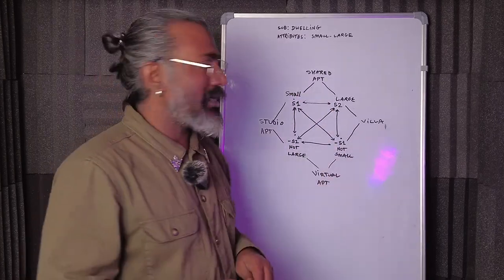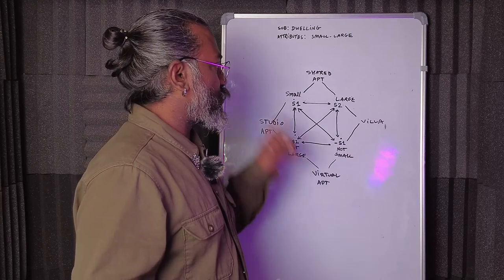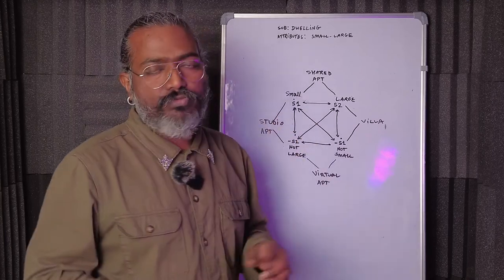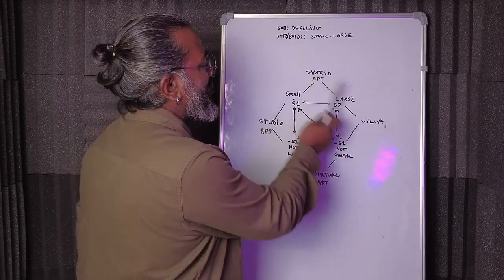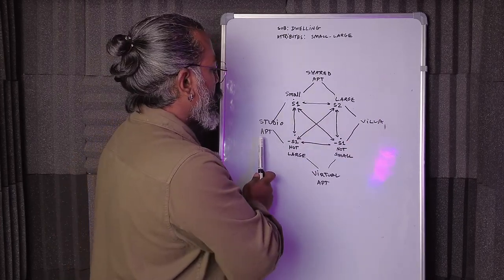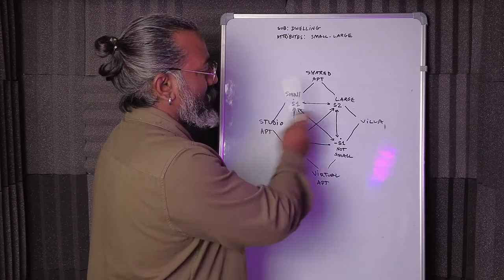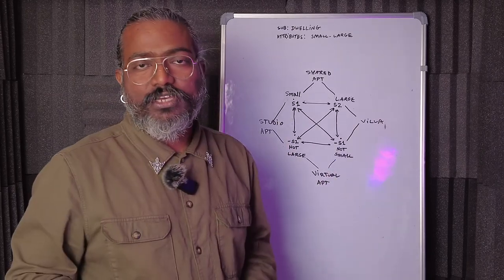a subject, human dwelling, and you have attributes like small and large, which are opposite words, and then you mapped it. Now you can see four distinct mappings of human dwelling. So this is